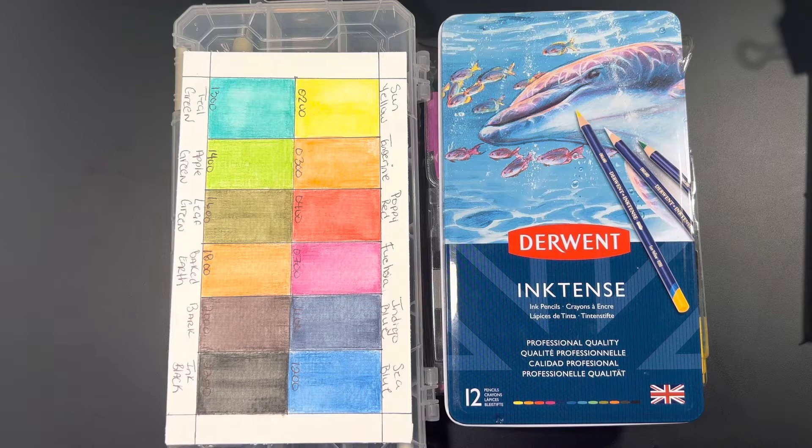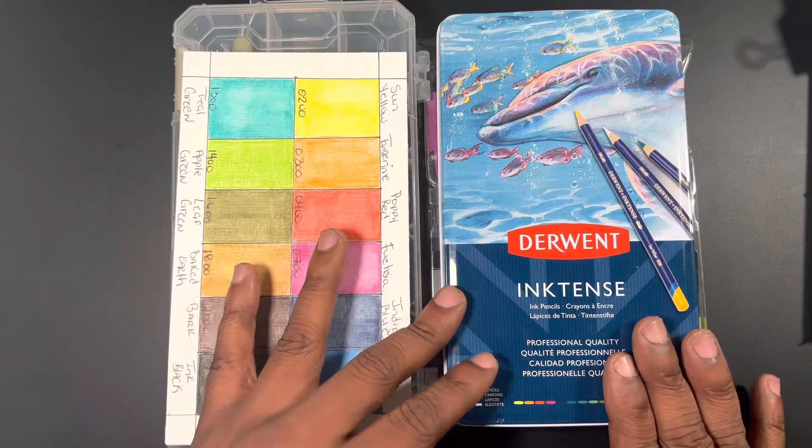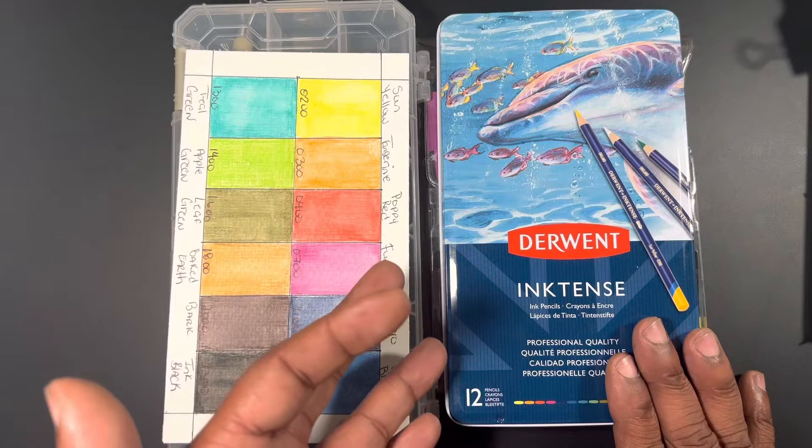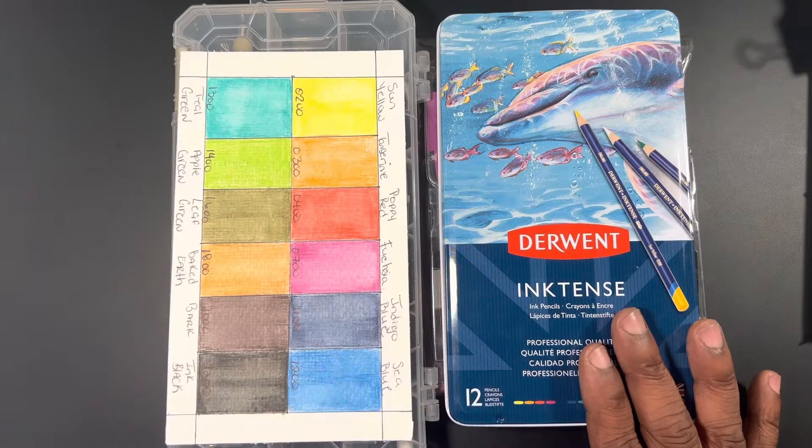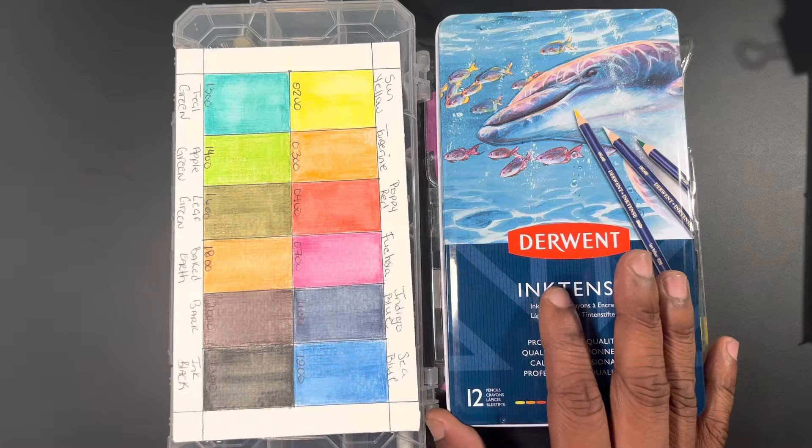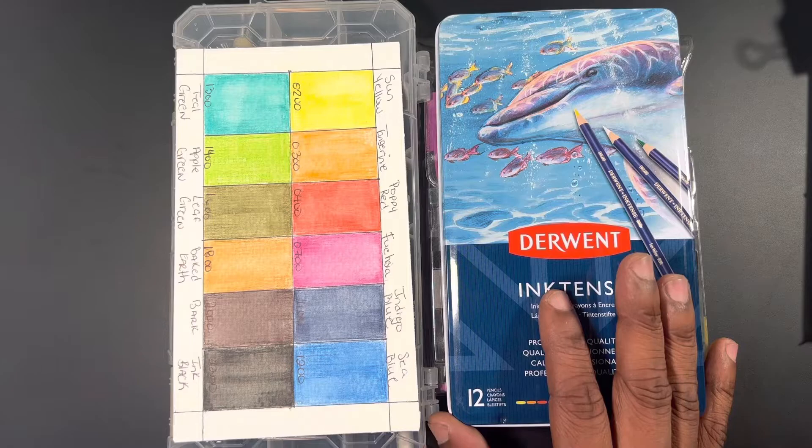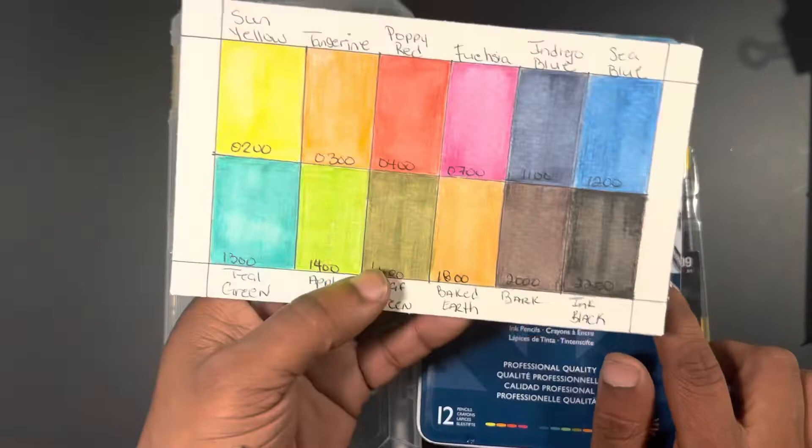I have a 12-pencil set of Derwent Inktense pencils. These are ink pencils. There's a full range in a full collection. Derwent makes great products. These have been on the market for quite some time. I've used them before, but I haven't done a review because I wanted to wait to use them during Inktober. Here is the color swatch sheet for those pencils.